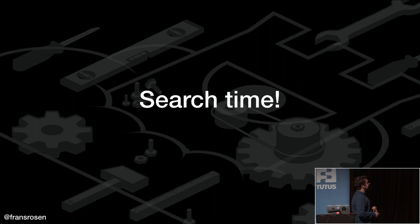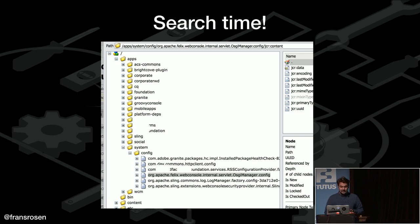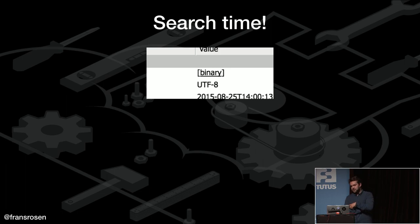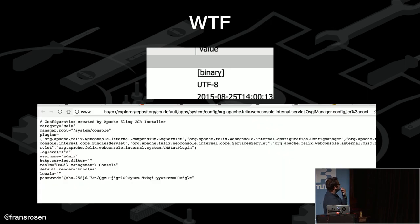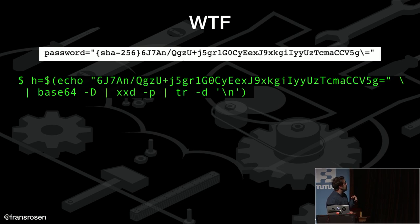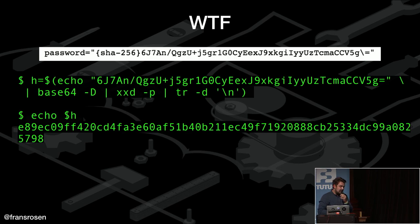I started searching for things like 'manager,' 'console,' 'admin,' 'password.' Suddenly in the repository there's an object called Apache Felix — specifically 'Felix web console internal servlet OSGi manager dot config.' I clicked on it, there was a binary link, I downloaded it, and I saw: a hashed password — SHA-256 — the manager root password, and the user is admin.